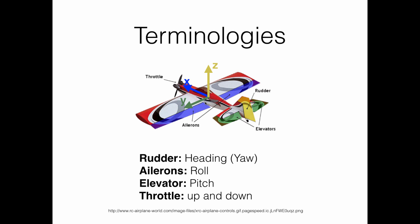Finally, the throttle controls the up and down direction of the aircraft in the direction of the z-axis. These four keywords are used in the two control sticks, left and right, of a remote control transmitter, such that every stick can control two of these directions.